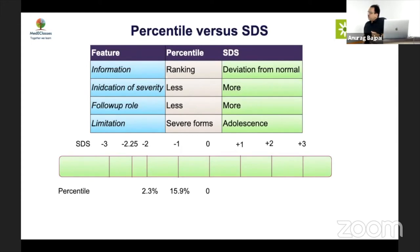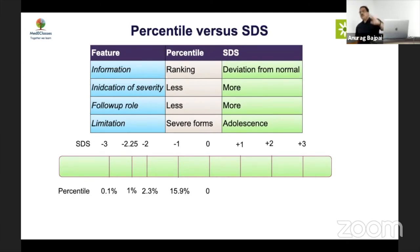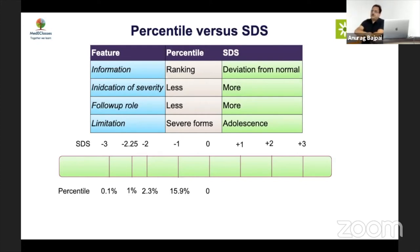When you say minus 2 to minus 3, you are actually increasing the rarity of the disease by 23 times — minus 3 SDS is 0.1 percentile while minus 2 is 2.3 percentile. It is 23 times less likely for an individual to be below minus 3. This is a very important concept to understand when interpreting growth data.